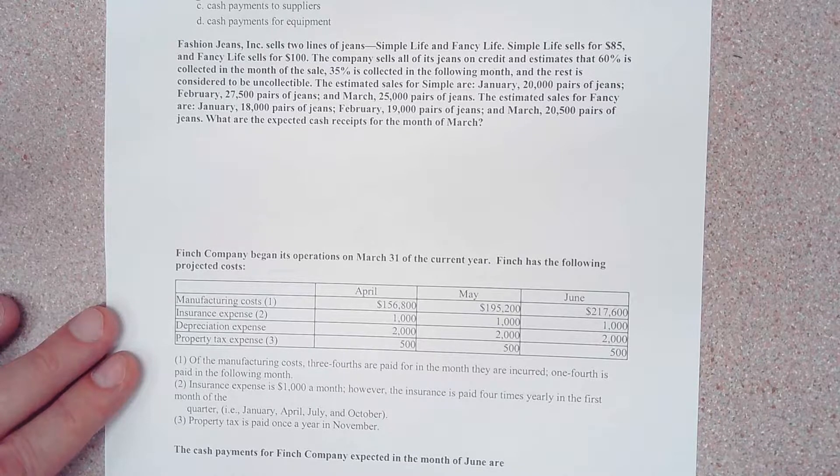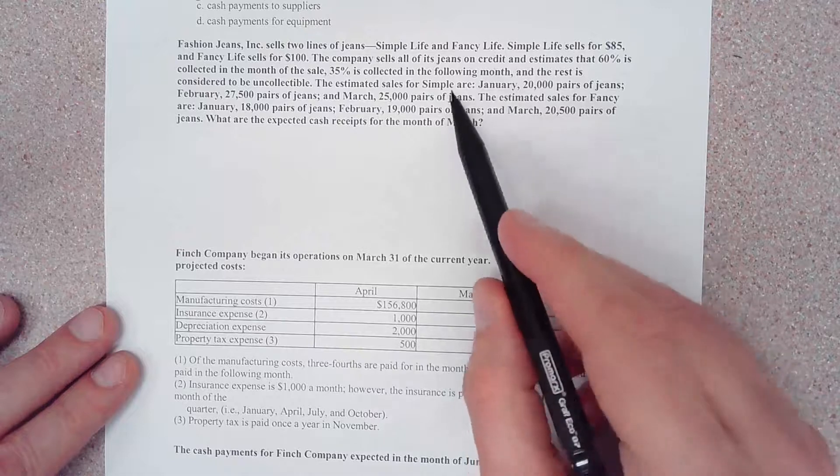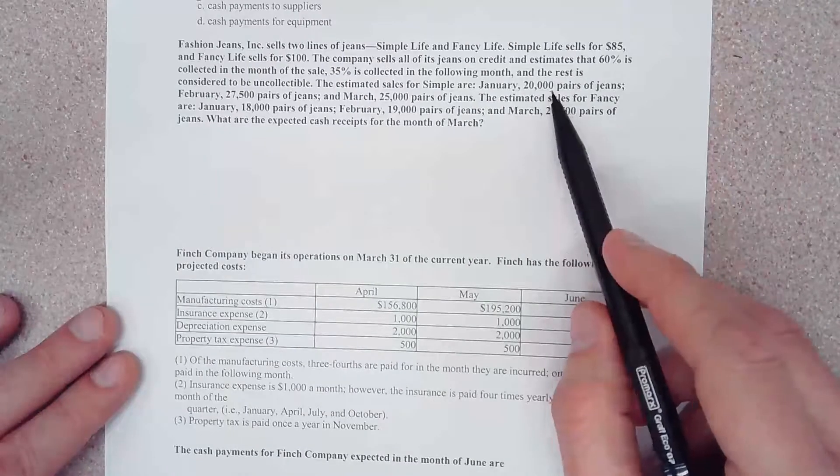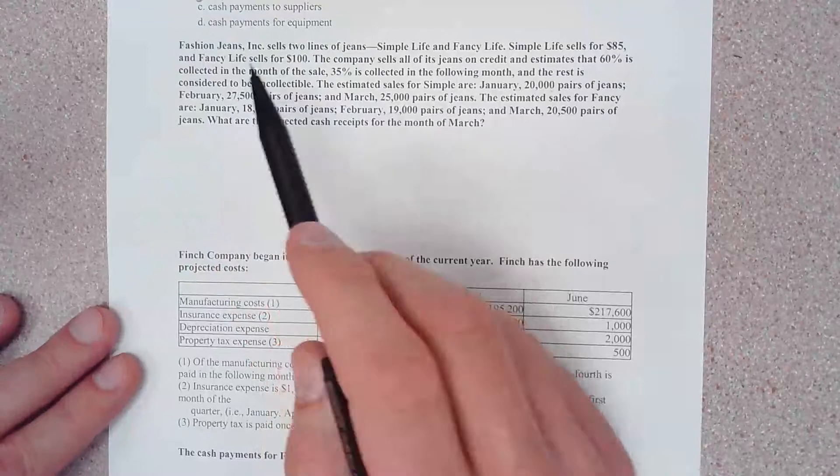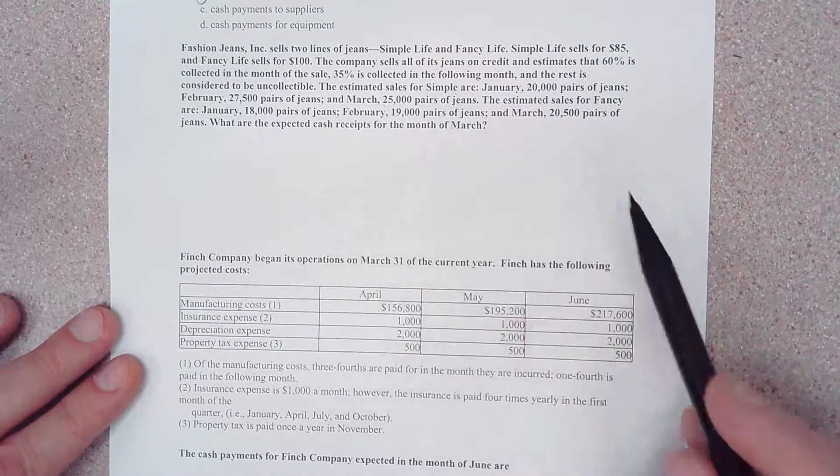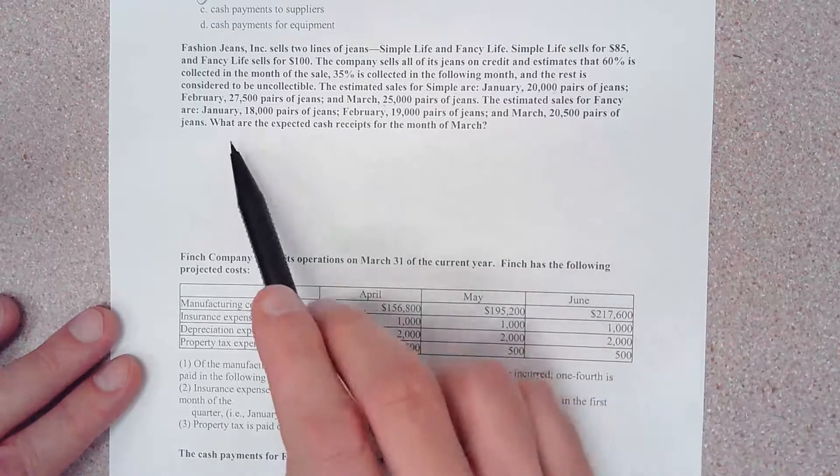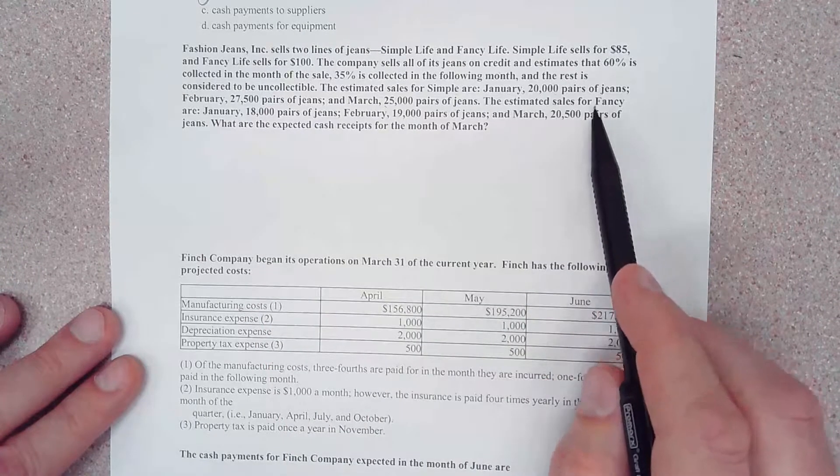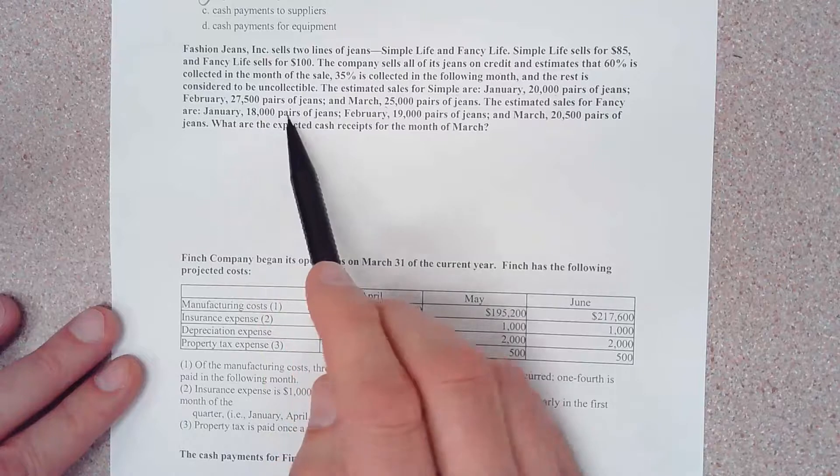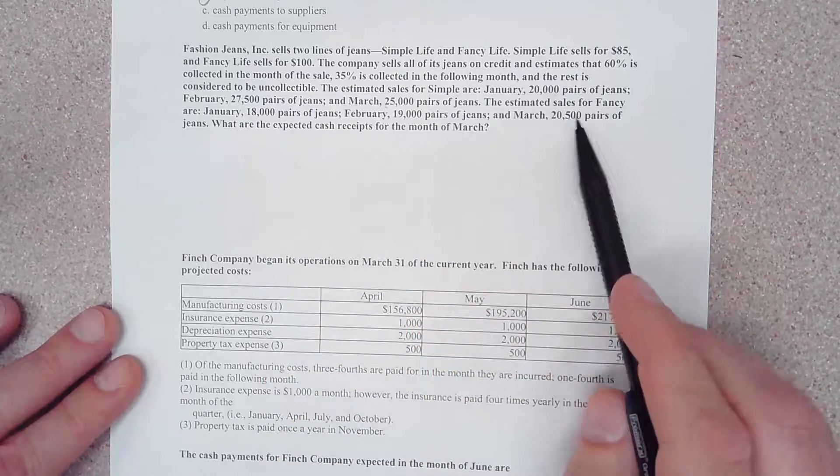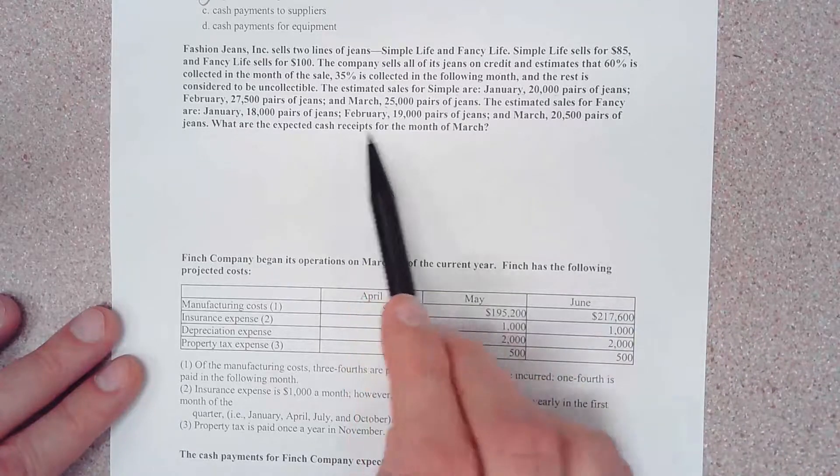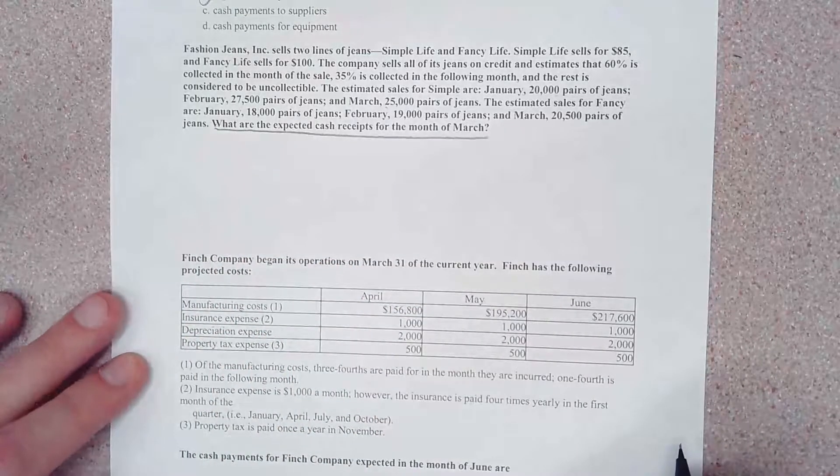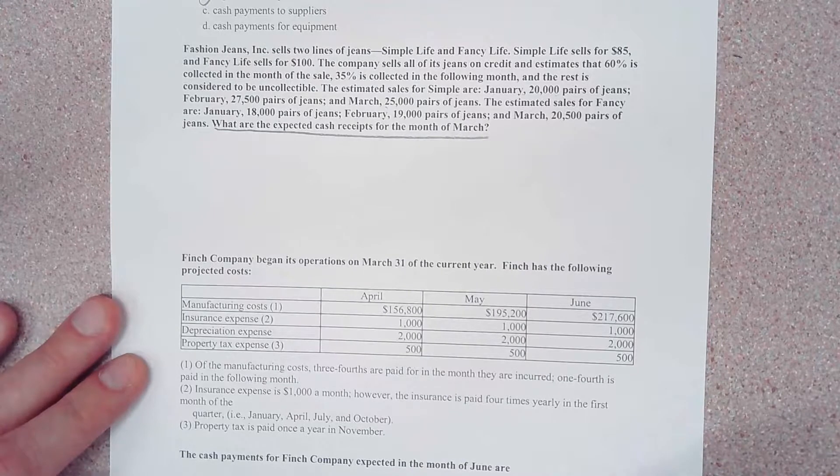The estimated sales for Simple Life jeans are January 20,000 pairs, February 27,500 pairs, and March 25,000 pairs of jeans. The estimated sales for Fancy jeans are January 18,000, February 19,000, and March 20,000 pairs of jeans. What are the expected cash receipts for the month of March?